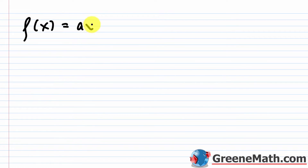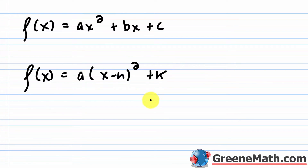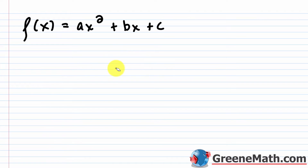In order to derive the vertex formula, let's start with f of x is equal to ax squared plus bx plus c, where a is not equal to zero. The idea is we're going to complete the square — remember, you're trying to create a perfect square trinomial so you can factor it into a binomial squared — to get f of x equal to a times the quantity x minus h squared plus k. You factor out the a because the coefficient of x squared needs to be 1 when completing the square.